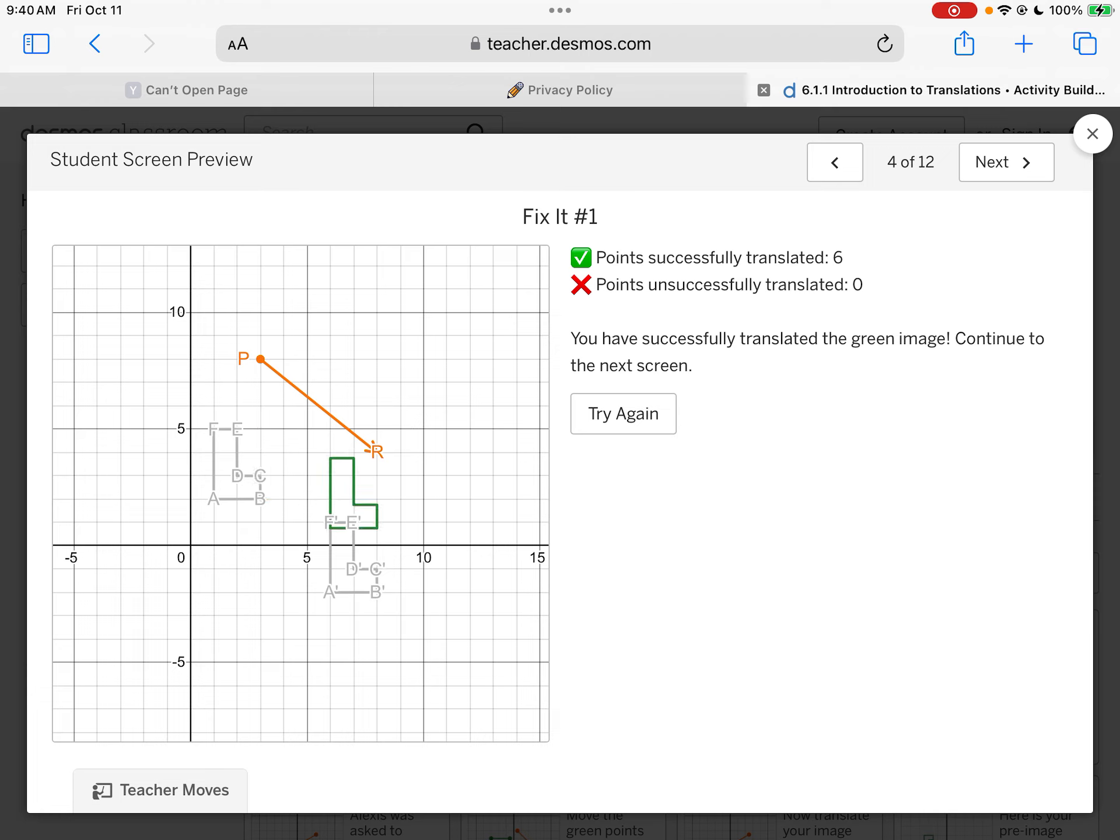Over 5, down 4. There we go. Now we have the exact same size and shape. It's just gone over 5 and down 4.